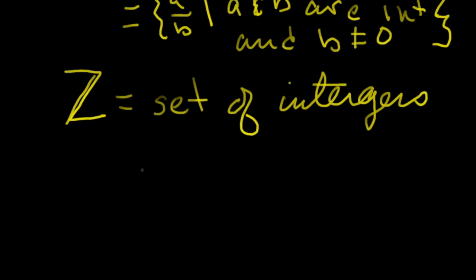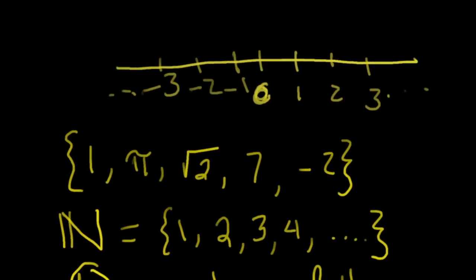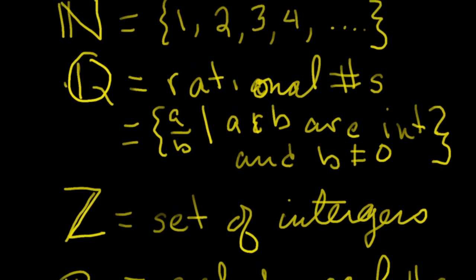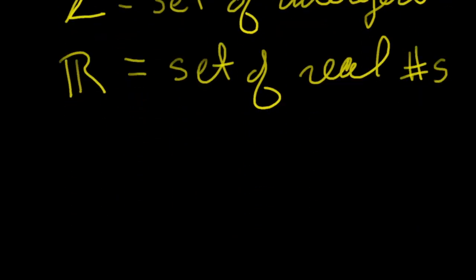And finally, the largest set that we'll work with in this class, we'll denote it by R and is a set of real numbers. So once we have these notations, we'll use these symbols in class again. So make sure these are in your notes: double script N for natural numbers or counting numbers, double script Z for the set of integers, double script Q for all rational numbers, and then finally the set of all real numbers.